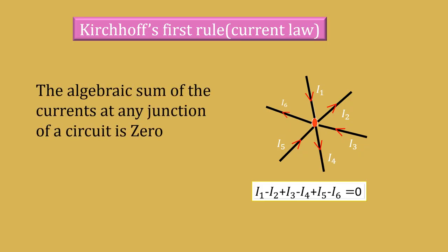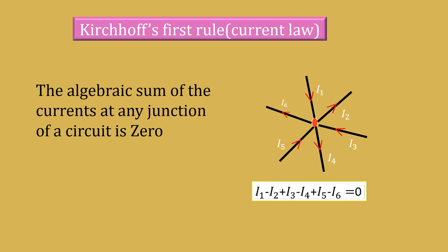Kirchhoff's first rule or current rule. The algebraic sum of currents at any junction of a circuit is 0. This is the junction. Current I1, I3, I5 are flowing towards the junction and currents I2, I4 and I6 are moving away from the junction. Whatever the current flowing towards the junction is considered to be positive and currents flowing away from the junction is considered to be negative. So I1 minus I2 plus I3 minus I4 plus I5 minus I6 is equal to 0.